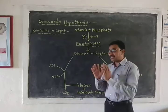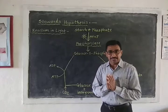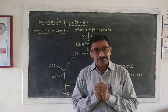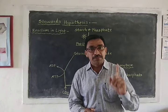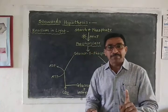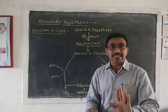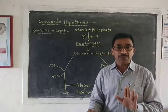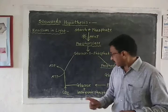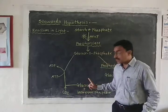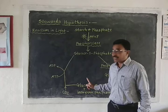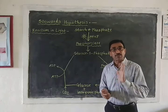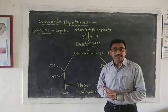When glucose dissolves in the guard cells, the osmotic pressure of the guard cells becomes increased, because the glucose dissolved in the guard cells increases the concentration of the cytoplasm of the guard cells.